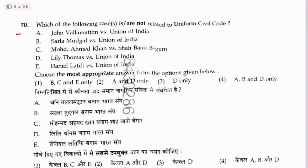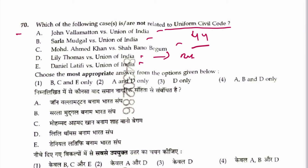Question 70: Which of the following cases are not related to Uniform Civil Code? All the listed cases discuss Article 44 on Uniform Civil Code, but in Lily Thomas only a slight reference is given. The answer could be only D. Answer is 3. However, this question is doubtful and the paper has already been cancelled — it is not a proper question.